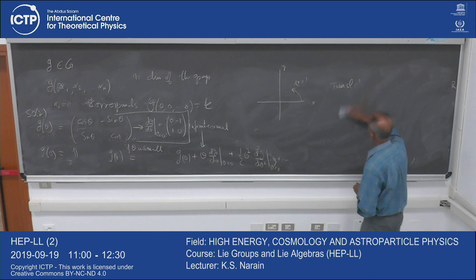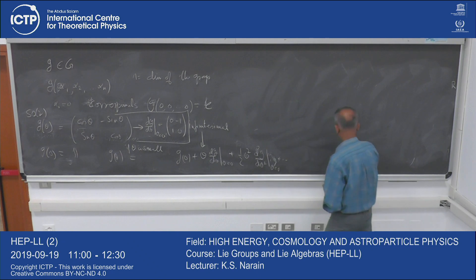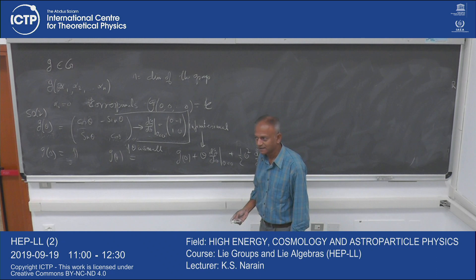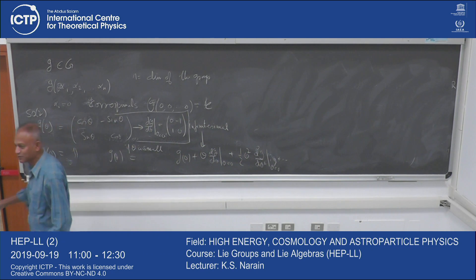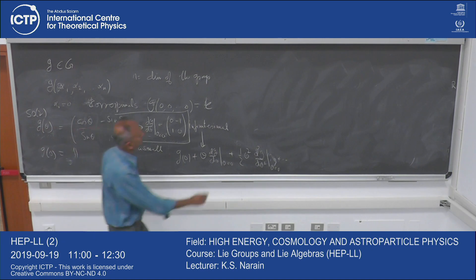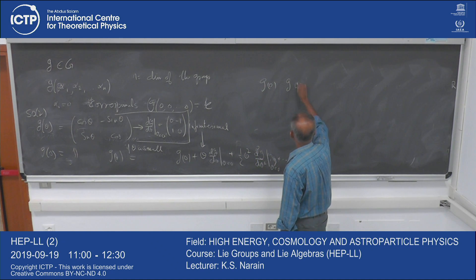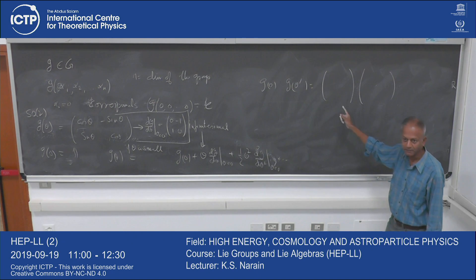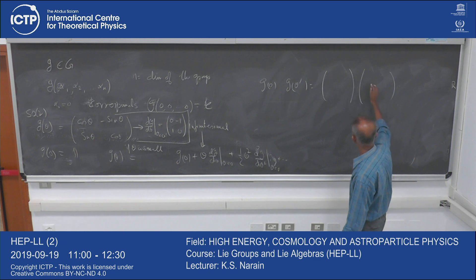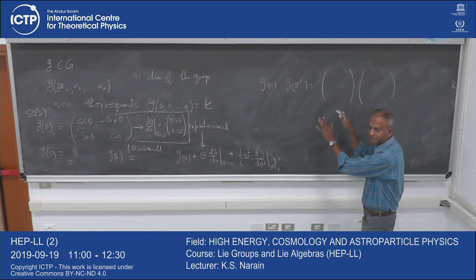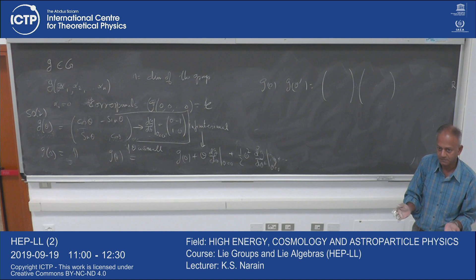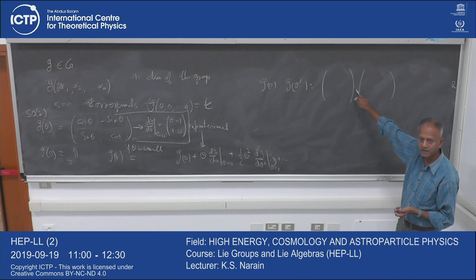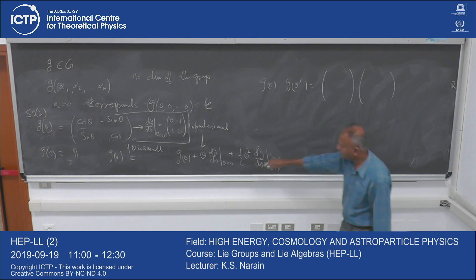The set of infinitesimal generators actually forms a vector space. At the level of the group, there was no concept of addition — there was the group composition law, which here is matrix multiplication. For example, G(theta) times G(theta') is given by matrix multiplication — you are not adding the two matrices. But at the level of infinitesimal generators, you can add them up.